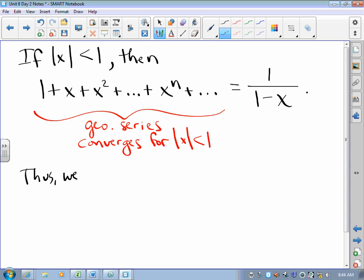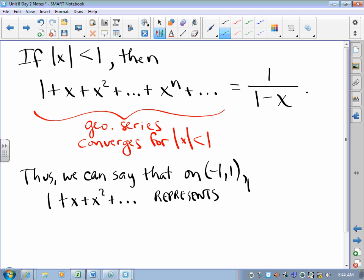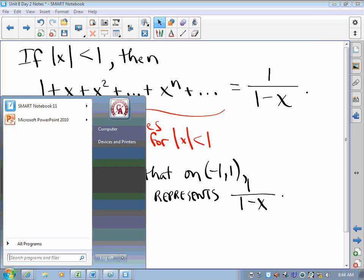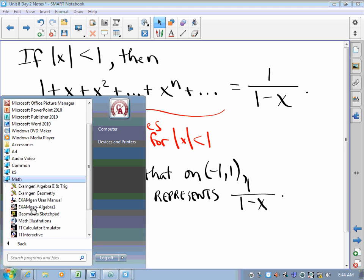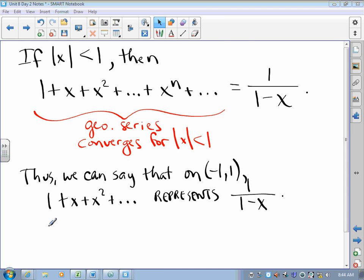Thus, we can say that on the interval from negative one to one, one plus x plus x squared plus and so on represents one over one minus x. What does that mean? Well, permit me to bring up a calculator for you. What does that mean?